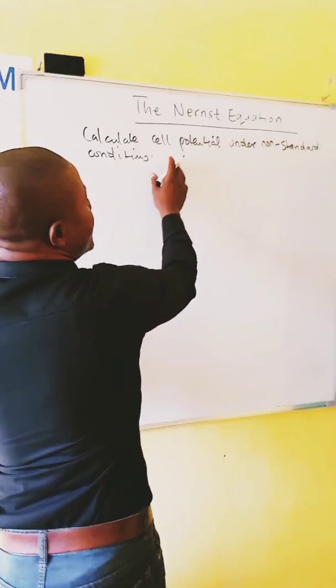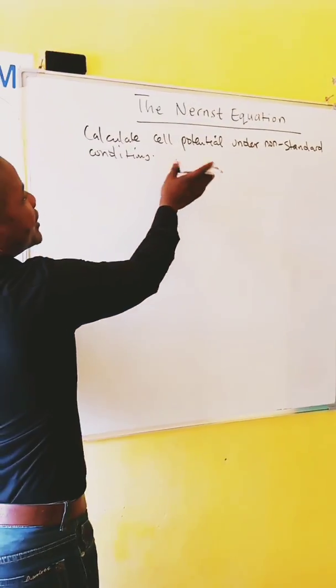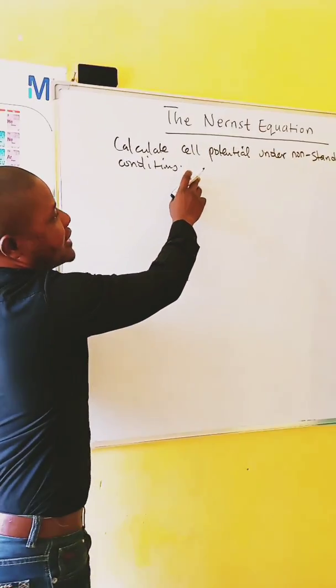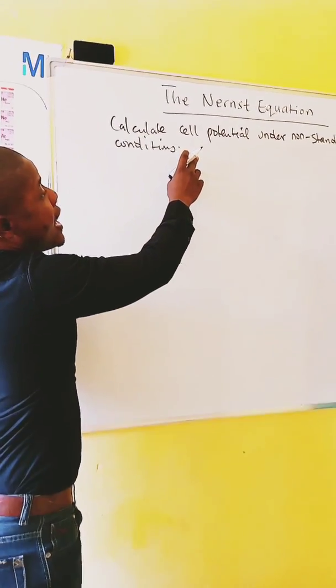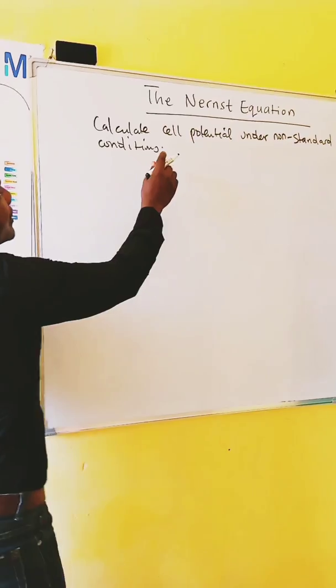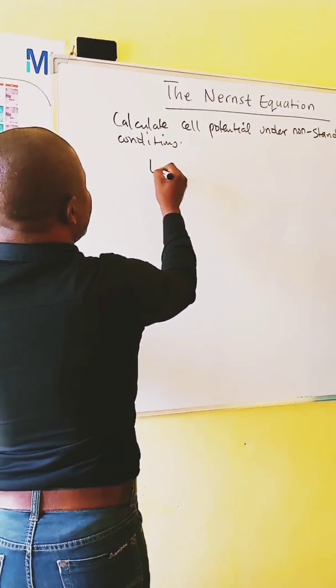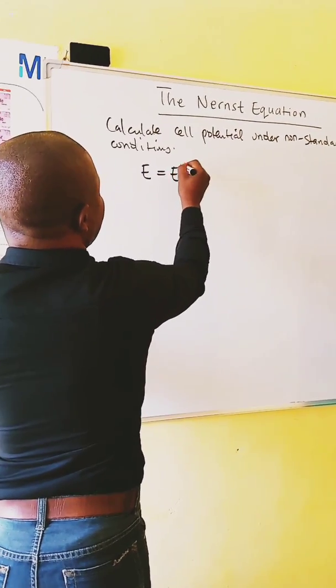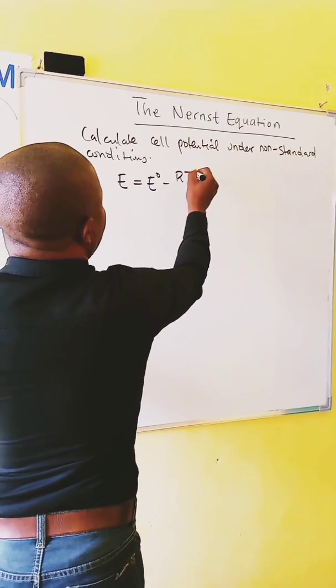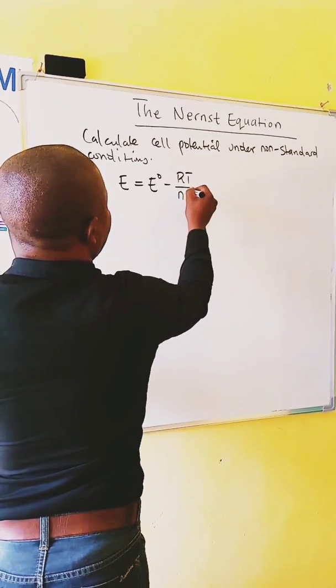This simply means the concentration of the reactants and the product is not one molar and the partial pressure is not one atmosphere. The Nernst equation is given as E equals E0 minus RT over NF.